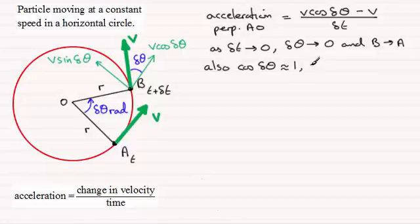So what does this tell us about the acceleration perpendicular to AO? Well we've got V times one. V in other words minus V which is zero. So you end up with the acceleration being zero. So the acceleration equals zero. Okay so that's in that direction.